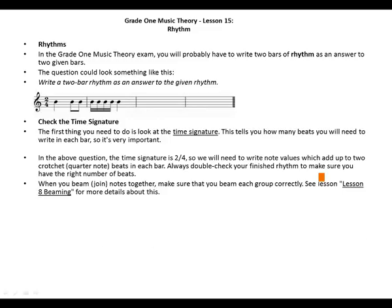When you beam or join notes together, make sure that you beam each group correctly — see Lesson 8 for more details about beaming. For Grade One, the rhythm will be in two-four, three-four, or four-four time with no upbeat.